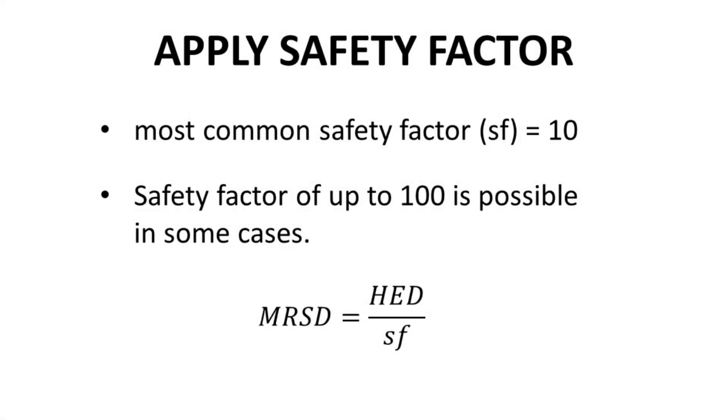The typical safety factor used to determine MRSD from HED is 10. So HED is divided by 10 to give MRSD. Note that the units of HED are the same as the units of MRSD, typically milligrams of drug per kilogram of patient mass.